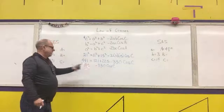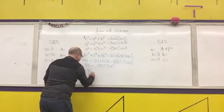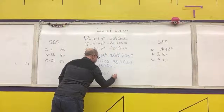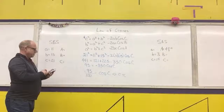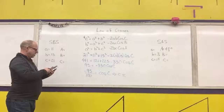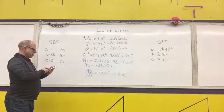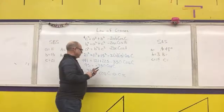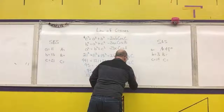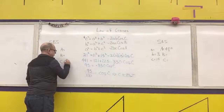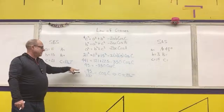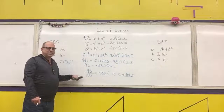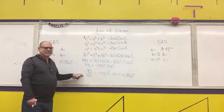Next, divide both sides by negative 330, then take the inverse cosine of both sides. I get the inverse cosine of negative 95/330, which gives 106.73 degrees — I'll call it 106.7°. I knew I'd get an angle greater than 90° because the only time the cosine is negative is in quadrant two, so that negative result told me I was in quadrant two.